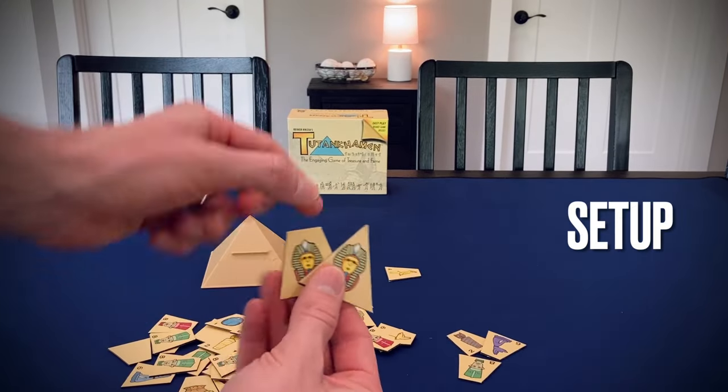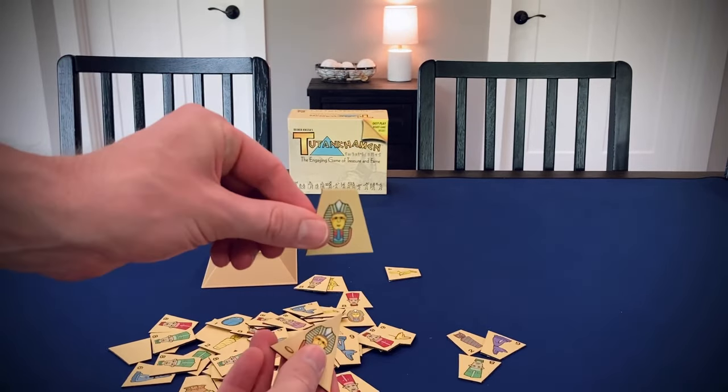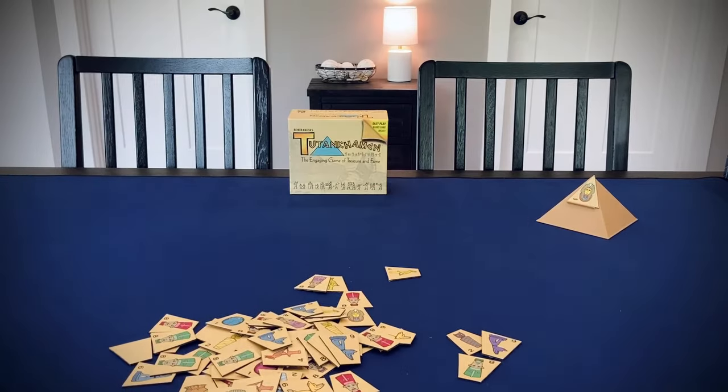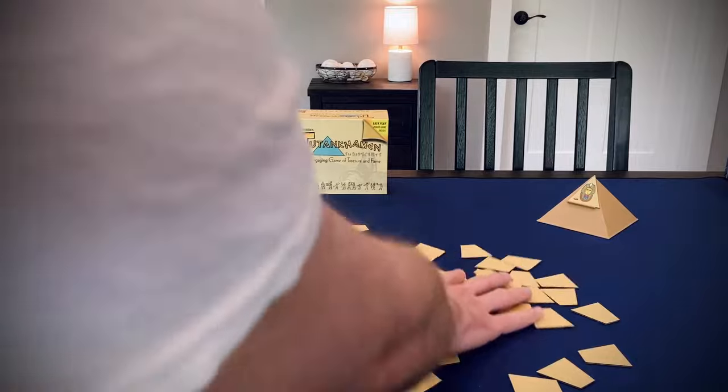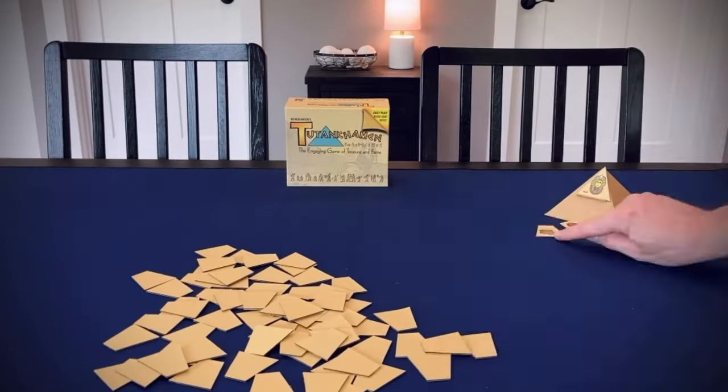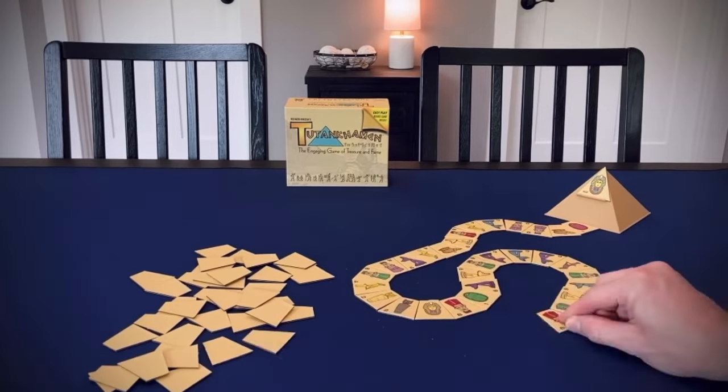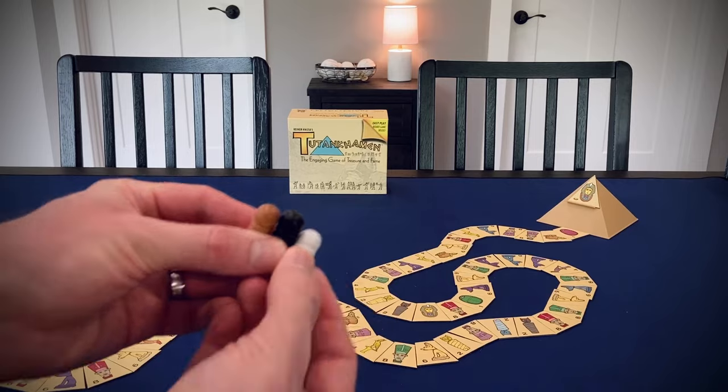To set up the game, find the tut tile. It's the triangle with the coin at the bottom. It's the only one shaped like a triangle in the whole box. That goes on the pyramid, and the pyramid goes off to the side somewhere. Now, you're going to mix all these tiles face down, and then start building out a random pathway by flipping these tiles face up, and sort of snake that pathway around the table however you want. It's a little time-consuming, but not too bad.